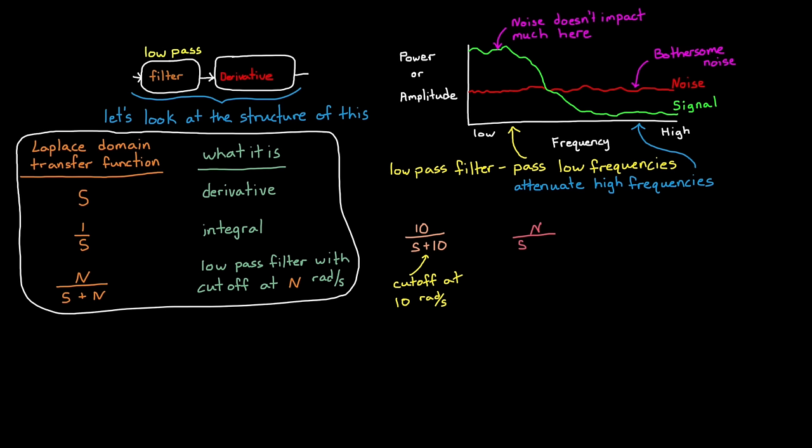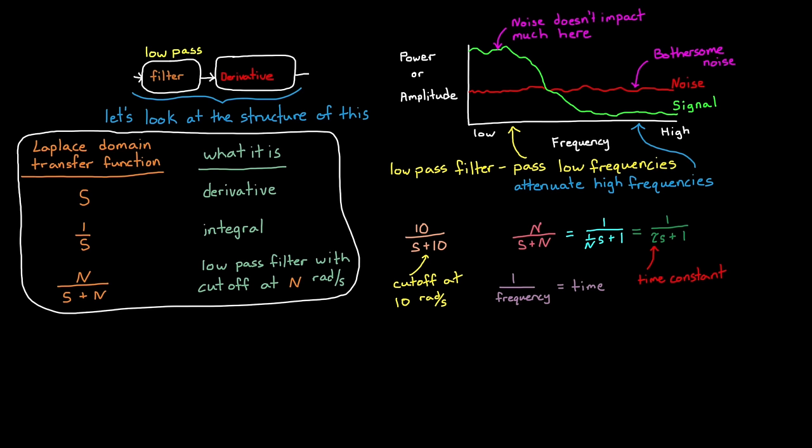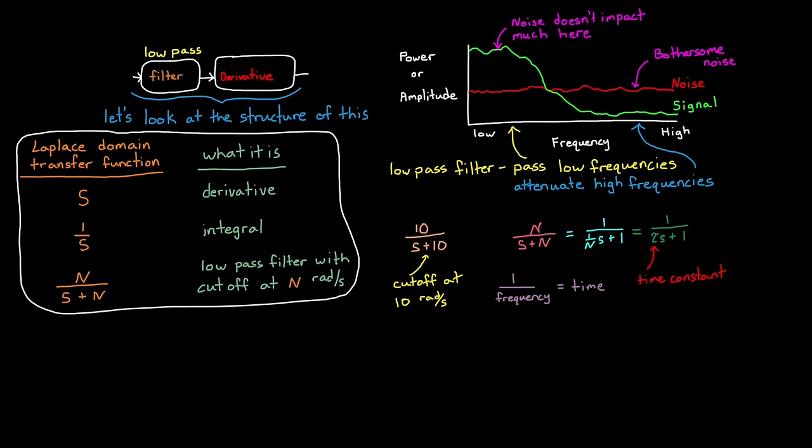Also n over s plus n isn't the only popular form of the first order low pass filter. We can divide the top and bottom by n to get 1 divided by 1 over n times s plus 1. And since the inverse of frequency is time, this form of the equation allows you to specify the time constant of the filter, rather than the cutoff frequency. Here, I'm using tau to represent the time constant, but you may also see t or tf depending on the industry that you're in.